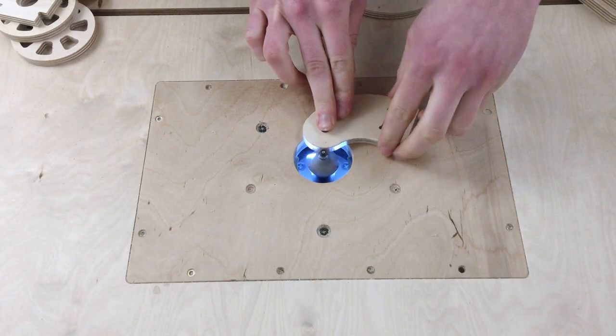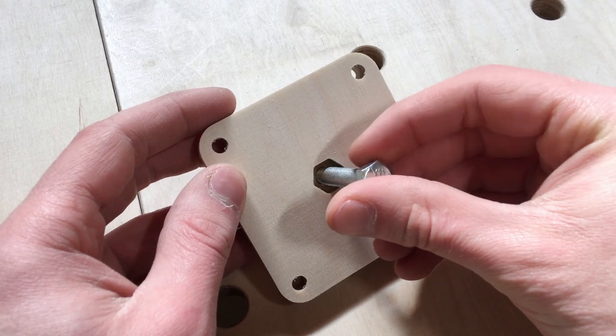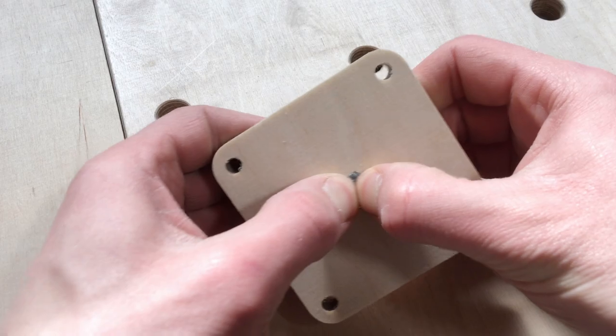After the CNC operations I used our router table to trim the component edges. The next task was assembling. As the first step I added a screw to the base panel.